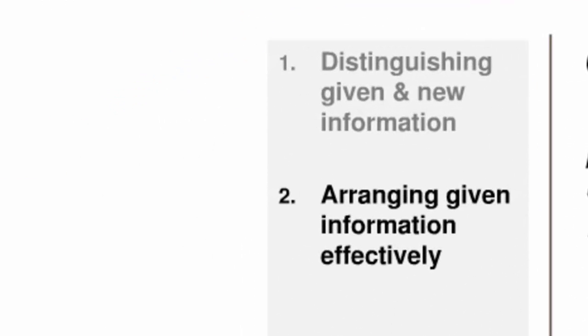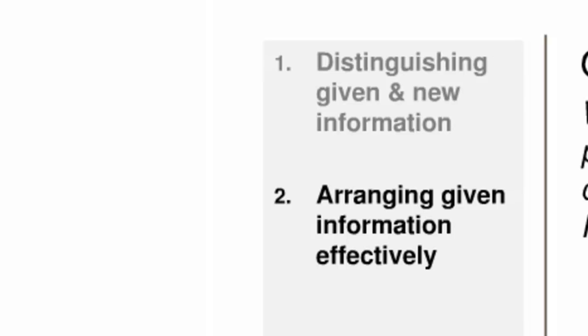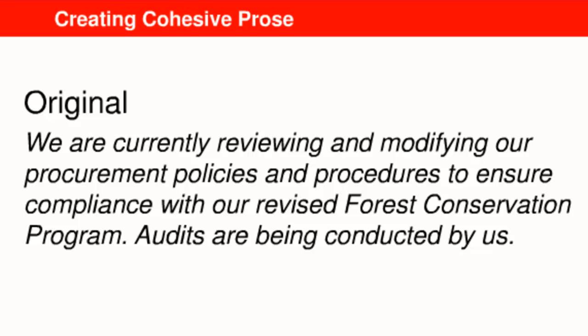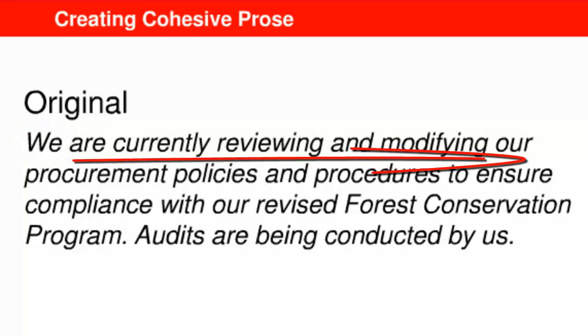The second aspect of cohesion you need to understand is the preferred arrangement of given information between sentences. Look at this sentence from the original version of the letter. When readers get to the second sentence and see 'audits' in the subject slot, they know they should treat this as given information. But it isn't mentioned in the previous sentence, so readers are likely to spend extra time processing. The writer erred by presenting 'audits' — information that's new — in the subject slot. The arrangement here, given to new to new, is not cohesive. You might imagine readers commenting that the passage is awkward or choppy or that it doesn't flow.